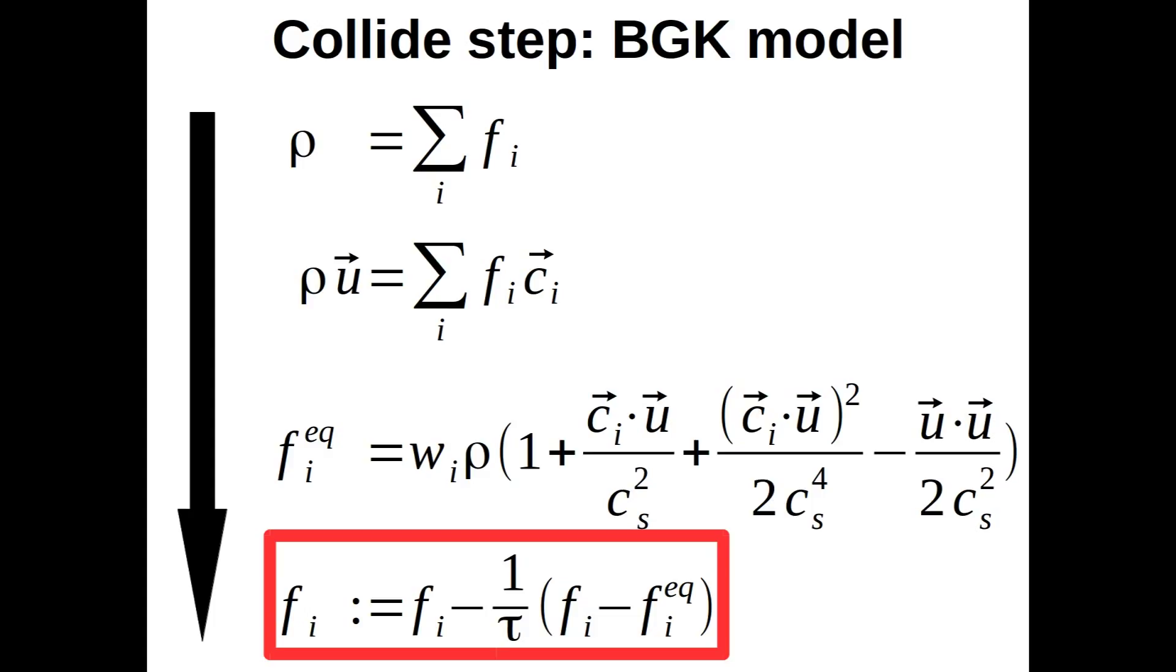That means our BGK model basically pushes our distributions Fi towards the equilibrium state.